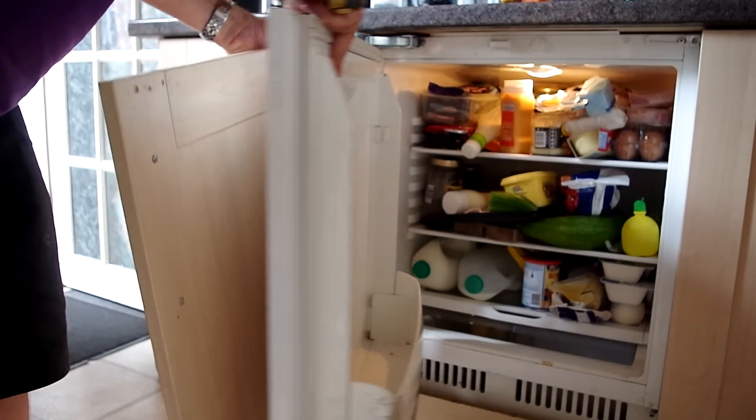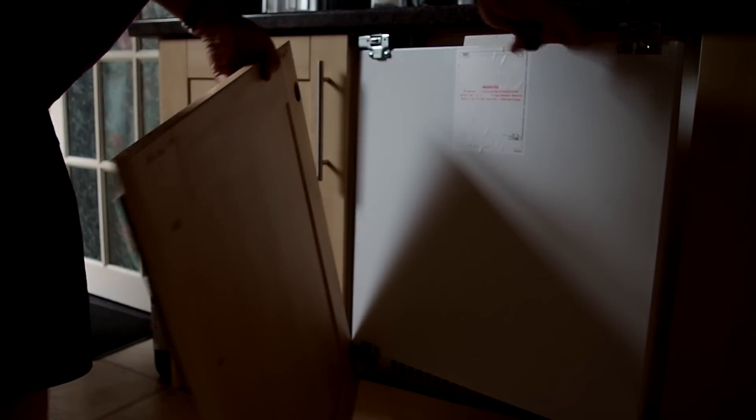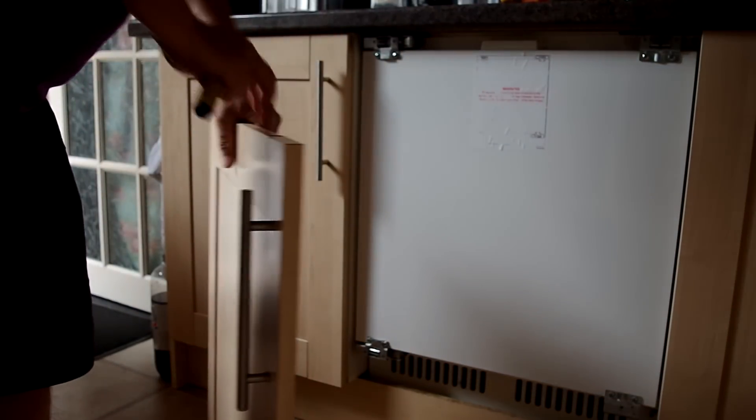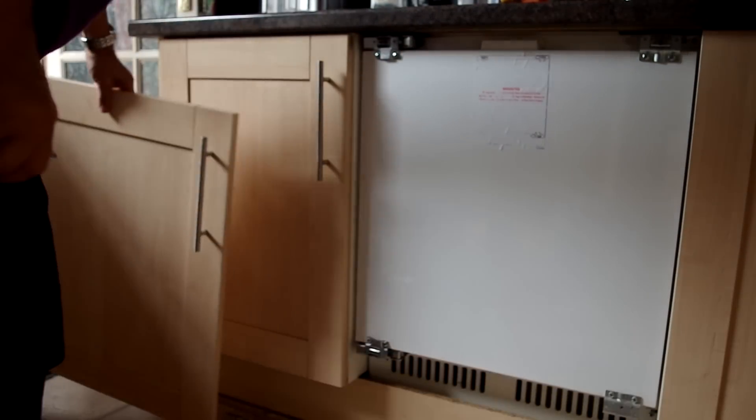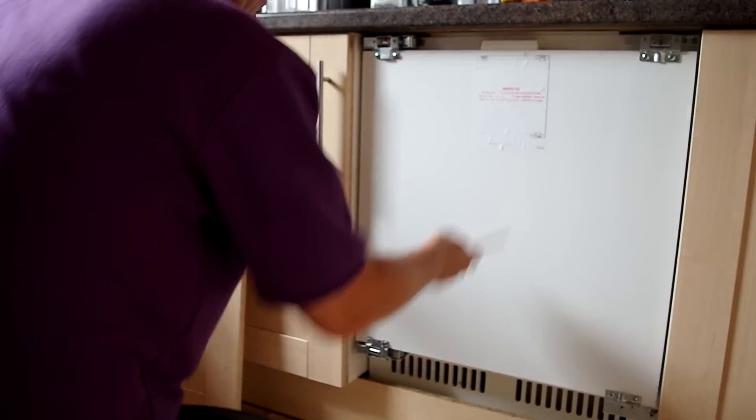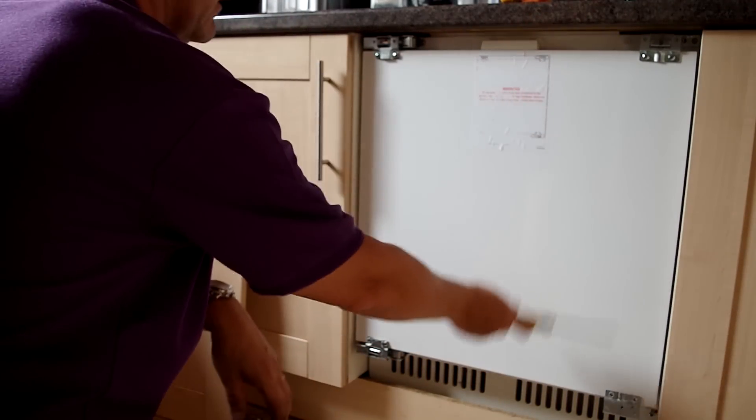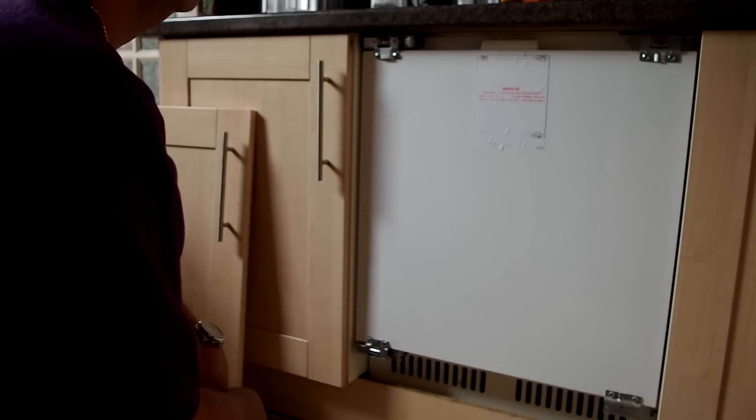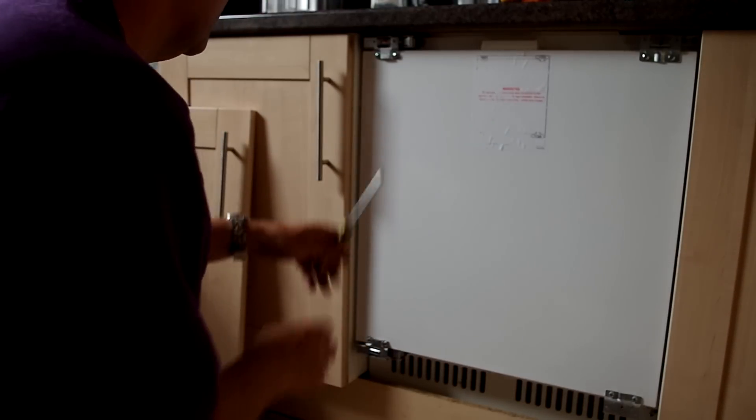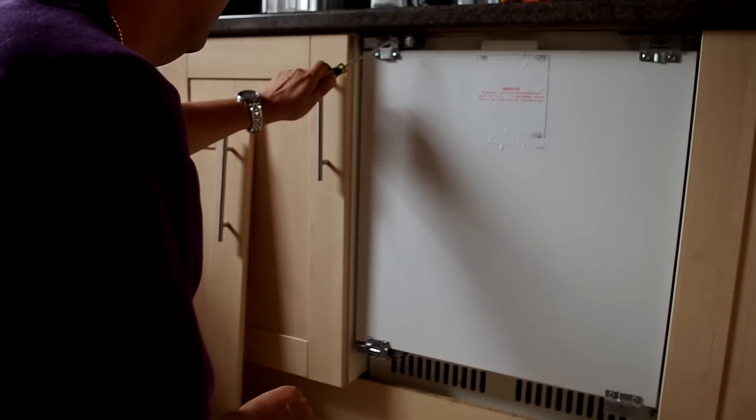Once you've got the outer door off, this is what you'll see. I'm going to turn the door off. You'll see on the main frame you've got the brackets in each corner, which are already fitted. This is the one that we've replaced.